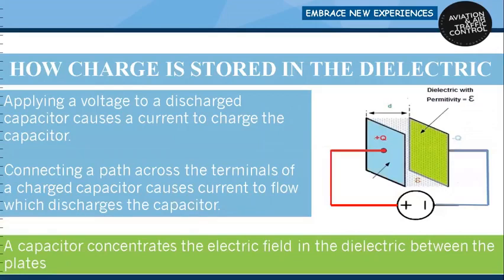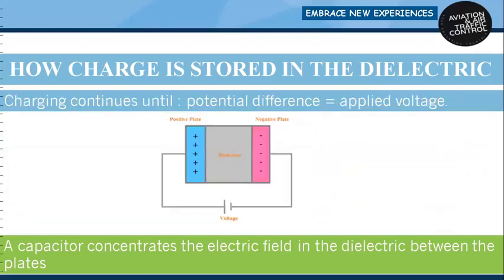Capacitors have two metal plates close together but separated by an insulator. When we apply voltage across them, electrons are removed from one plate and applied to the other plate, and each becomes charged. The charge held by the combination may be very large because of the concentration of the electric field between the plates. This represents a basic capacitor. A capacitor concentrates the electric field in the dielectric between the plates, and charging continues until the potential difference between the plates equals the applied voltage.